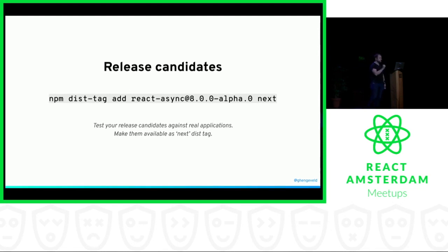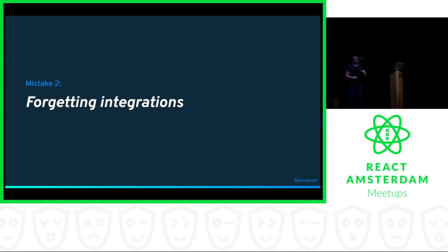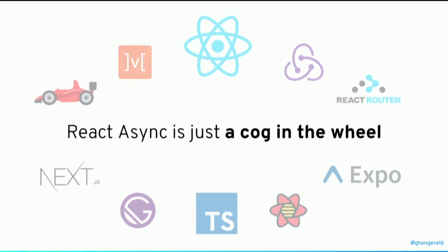Mistake number two is forgetting about the integrations. React Async is just one library, just a cog in the wheel - part of a bigger whole. You'll use it in your React application, but that might be a Create React App, someone's own custom Webpack config, Next.js, Gatsby, or React Native. And with TypeScript, Redux, MobX, React Router, Downshift, React Table - things that came up in the issue tracker. You have to take care that your library doesn't break in the bigger picture.